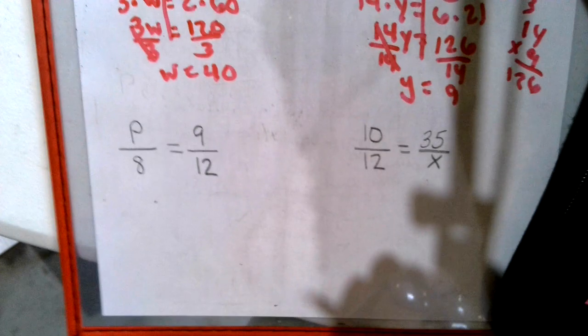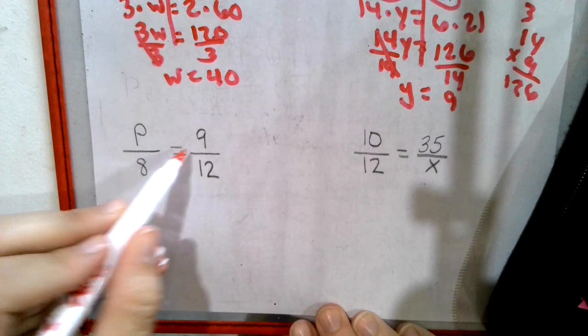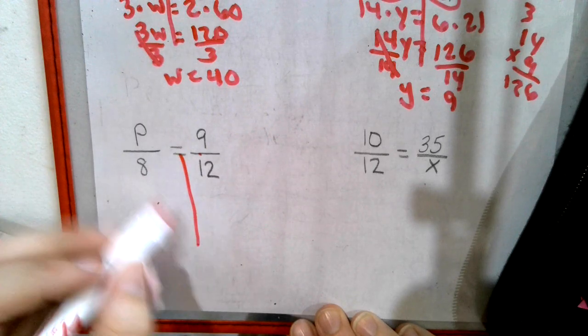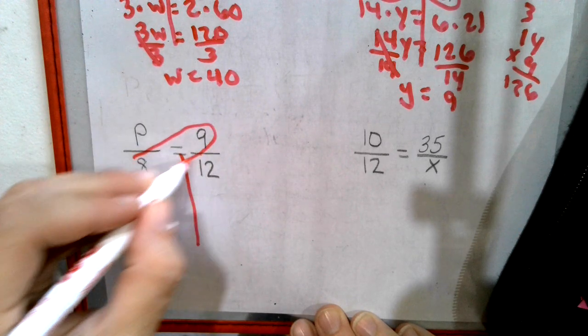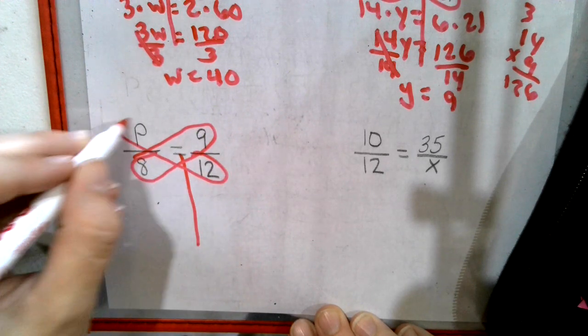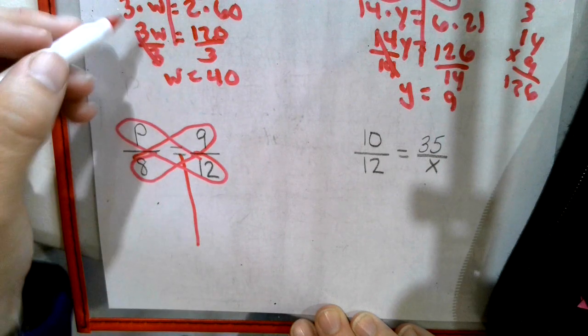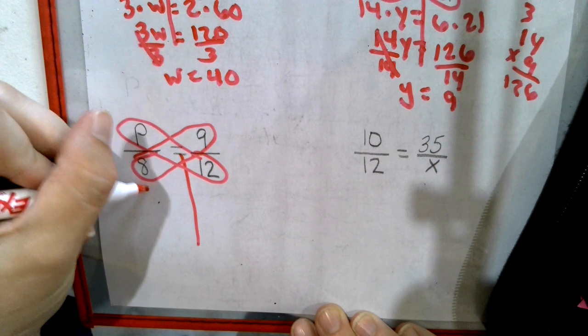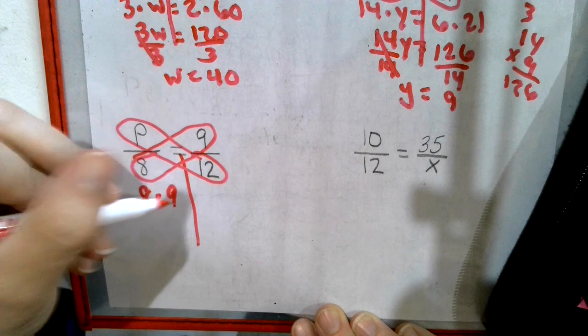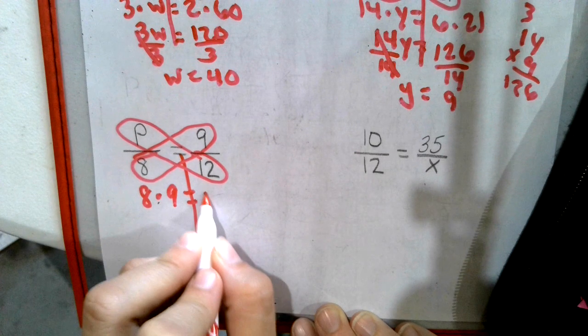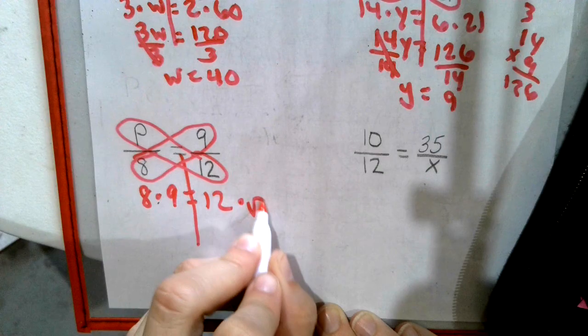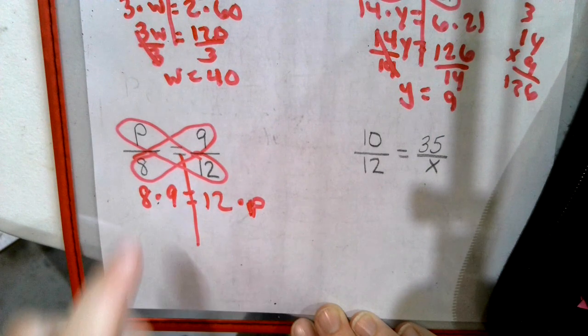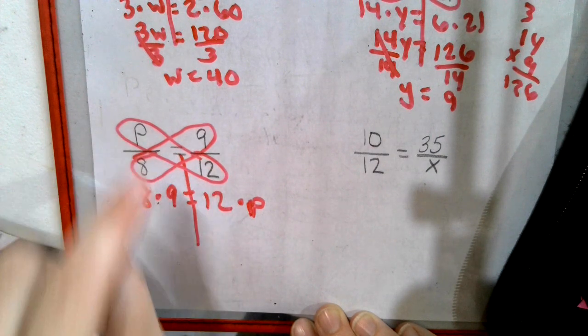Two more. Draw a line. Notice my letter keeps changing. It doesn't matter. It doesn't matter if the letter's on the left or the letter's on the right. It's up to you. I always start low. So 8 times 9, 12 times P.